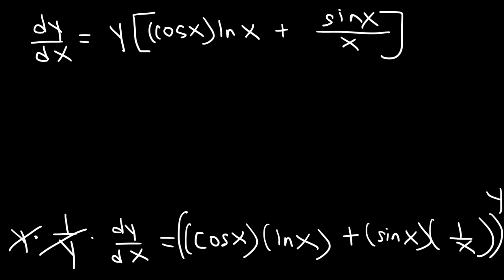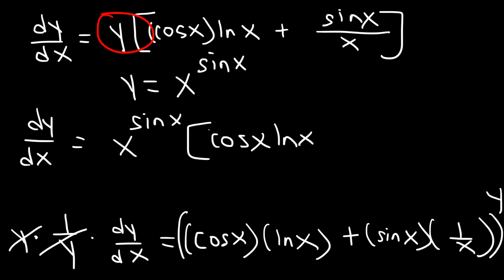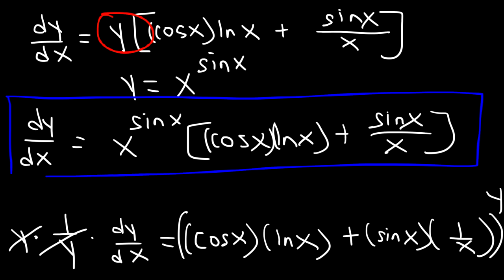There's not much simplification to do, so we multiply both sides by y. Recall that y is x raised to the sin x — it's the original problem. So the final answer is: dy/dx equals x to the sin x times the quantity cosine x times ln x plus sin x over x. As you can see, as long as you follow the steps, logarithmic differentiation is not that bad.